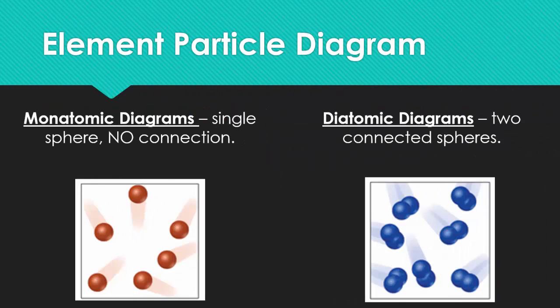Monatomic diagrams are just single spheres with no connection to one another. So those elements that we talked about, like sodium, for example, this is a perfect particle diagram of it.